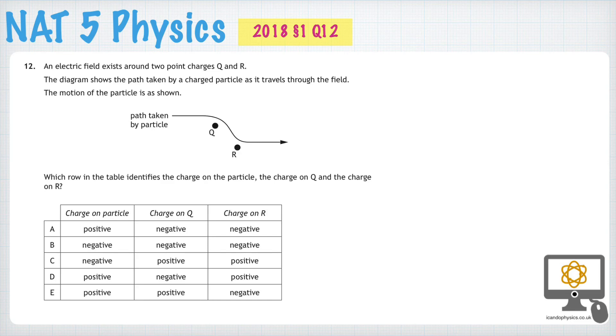Question 12 from the 2018 National 5 Physics paper assesses our understanding of the path that a charged particle follows whenever it moves through an electric field.